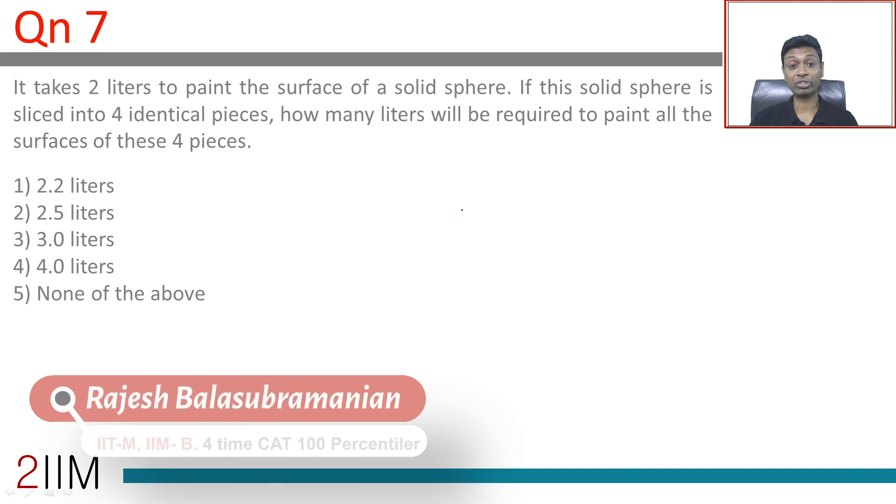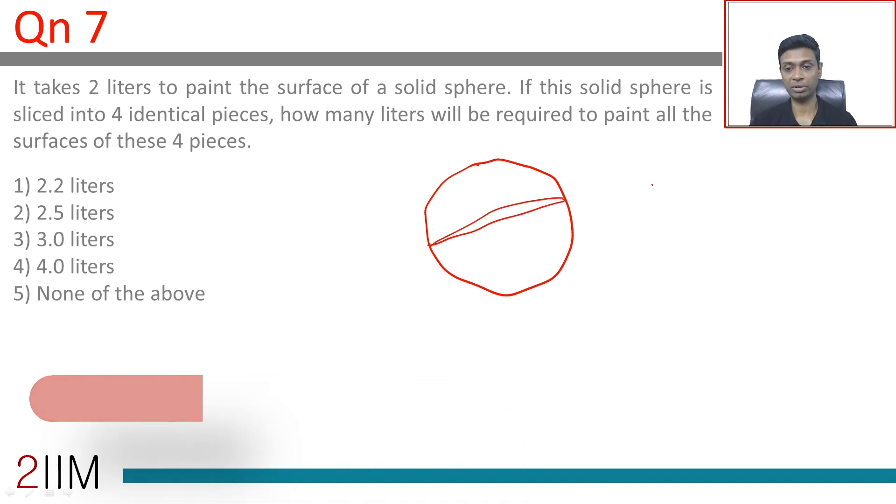It takes 2 liters of paint to paint the surface of a solid sphere. Remember, this is 4πr², and this gets covered by 2 liters.